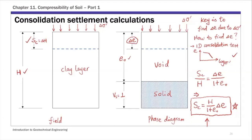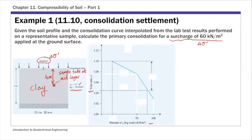I highlighted the last equation from last time. SC is our goal — that's the primary consolidation settlement. On the right-hand side, you have delta E, the void ratio change due to added loading. The key is this delta E. The purpose of conducting the 1D consolidation test in the lab is to figure out the relationship between void ratio change and added loading — that's this E log sigma prime curve. That was a simple example from last time.